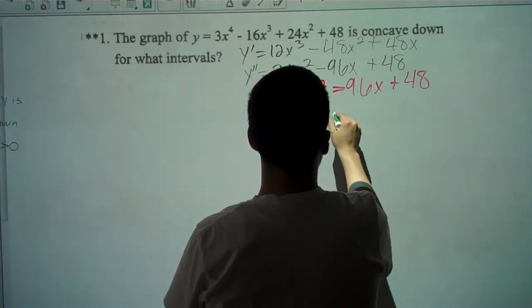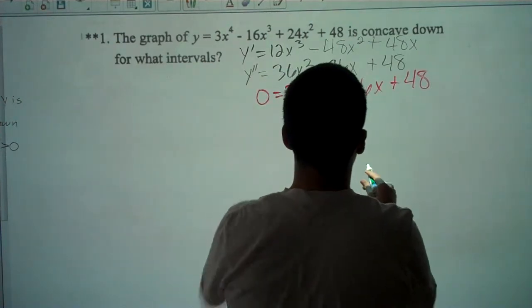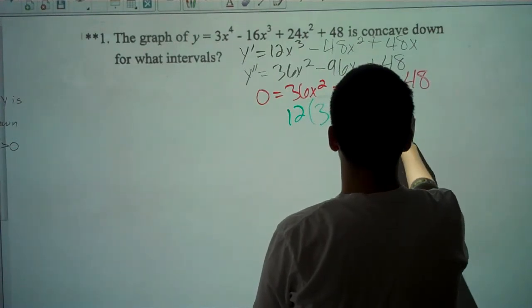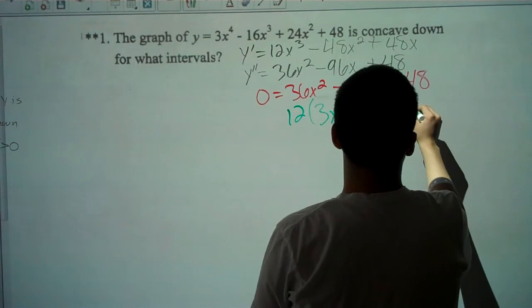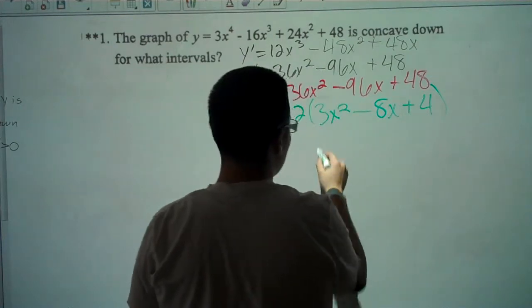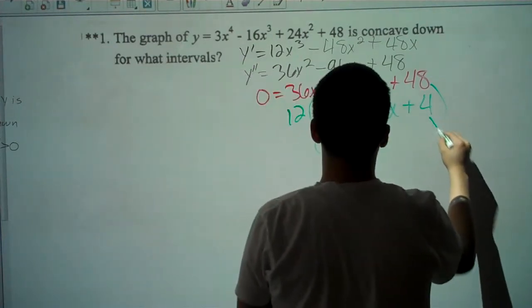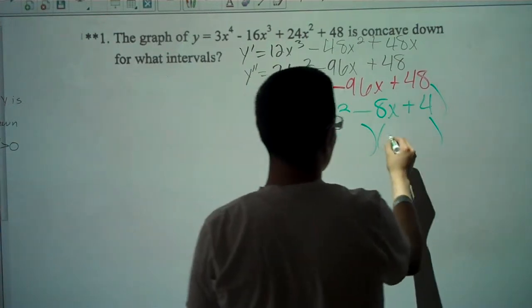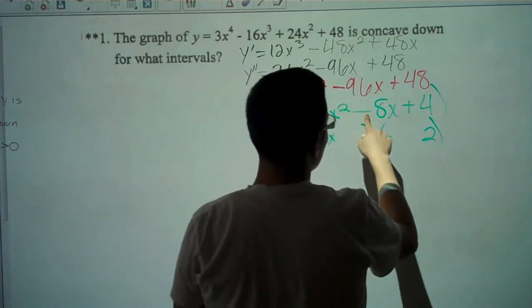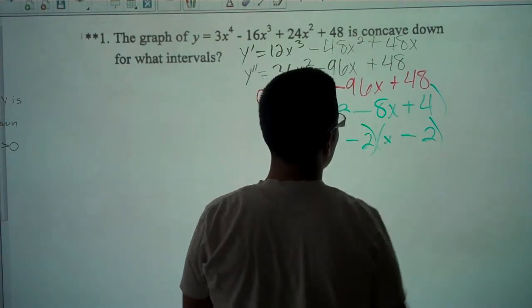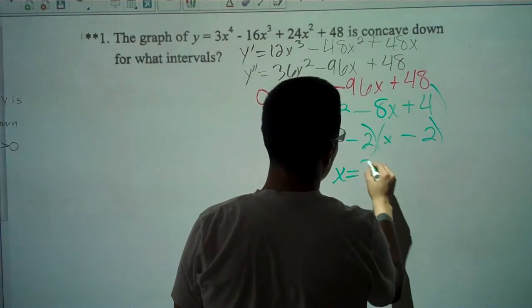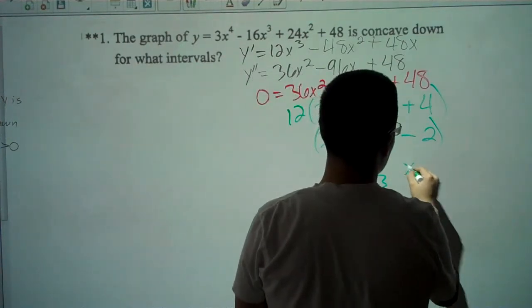12 times 3x squared minus 8x plus 4. We can factor this: 3x and x, and we have to get a 4 so there's 2 on both sides in order to get negative 8x with a minus on both. So your two x's are going to be x equals 2 thirds and x equals 2.